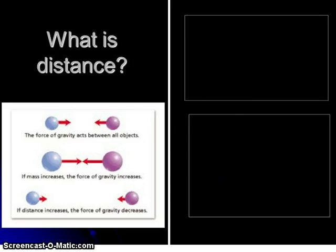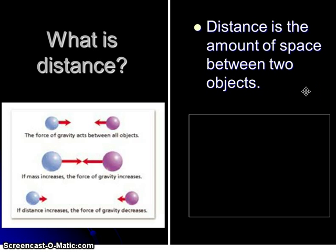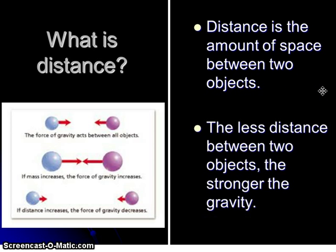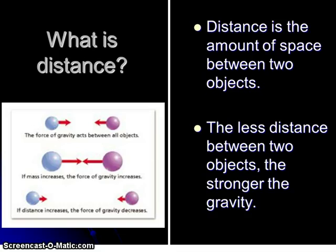The second thing that affects gravity is distance. The sun is the most massive thing in our solar system, which means it has the most gravity, which is why all the planets revolve around the sun. But not everything revolves around the sun — the moon revolves around the earth. This is because of distance. Distance is the amount of space between two objects, and the less distance between two objects, the stronger the gravitational pull. Because the moon is actually closer to the earth than to the sun, the moon feels the earth's gravitational pull more than the sun's. It's a combination of both mass and distance that affect the gravity of all objects in space.